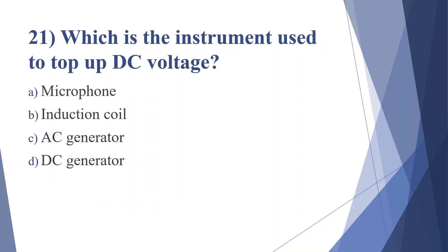Twenty-first question: which instrument is used to step up DC voltage? Option A: microphone, option B: induction coil, option C: AC generator, option D: DC generator. Answer is option B, induction coil.